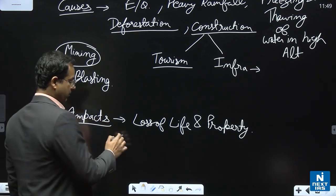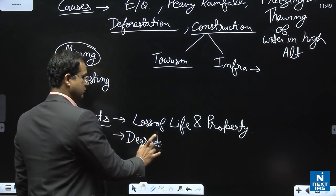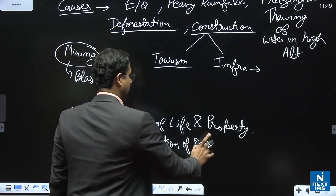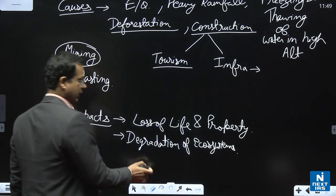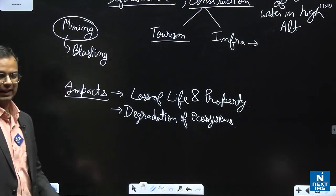In addition, other impacts can be degradation of the environment, degradation of environment, ecosystem of that area. The entire trees, lakes, etc., they are completely destroyed. So entire ecosystem is degraded and destroyed.